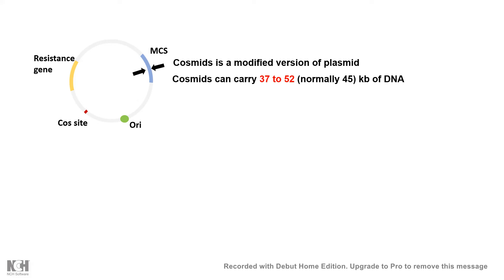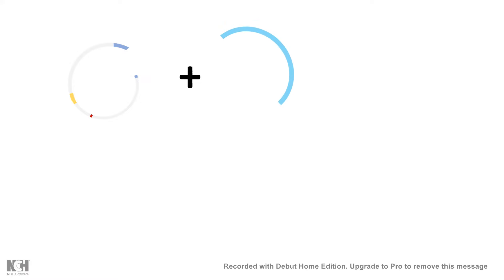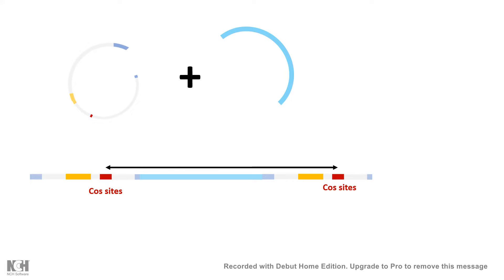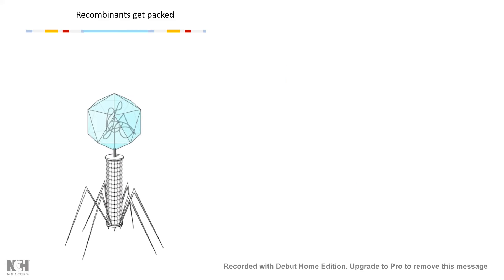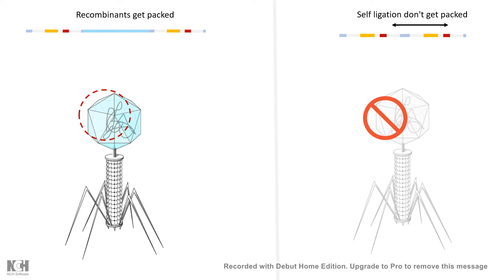Let's say we cut the cosmid vector with a restriction enzyme and insert our gene of interest — say, 40 kb pairs. This is ligated into the restricted cosmid vector. If the cos sites end up 30 to 50 kb pairs apart in the final construct, it gets efficiently packed into the phage head. Self-ligated products or non-specific products smaller than the desired size won't be packaged, which is an advantage because we don't want non-specific products inside the phage.